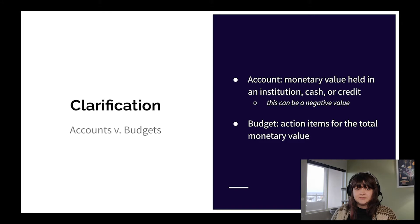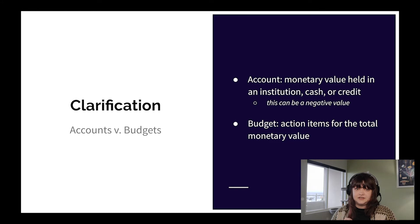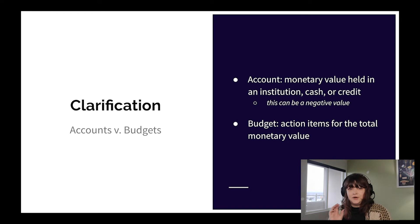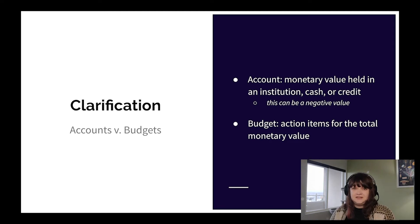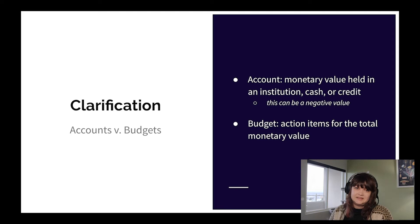The difference between these accounts that have a monetary value and your budget is that your budget is a list of action items, or as YNAB's Jesse Mecham will call them, jobs for your dollars. All of these accounts add up to a total sum, and then your budget gives all of those dollars a job, some kind of action you need them to do before you get paid the next time. This is the method that can really help you break the paycheck to paycheck cycle.